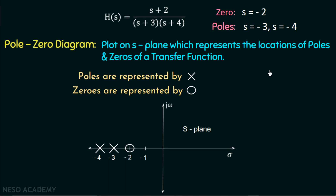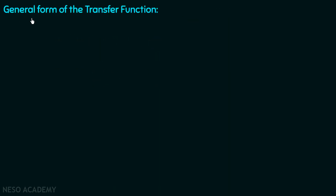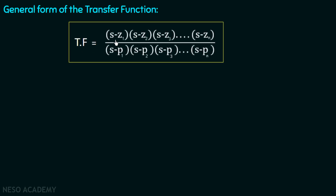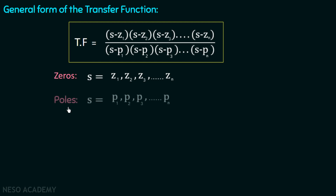Now let us understand zeros and poles for a general transfer function. The general form is: H(s) = [(s − z₁)(s − z₂)(s − z₃)···(s − zₙ)] / [(s − p₁)(s − p₂)(s − p₃)···(s − pₙ)]. This transfer function has n zeros at s = z₁, z₂, z₃, ..., zₙ and n poles at s = p₁, p₂, p₃, ..., pₙ.